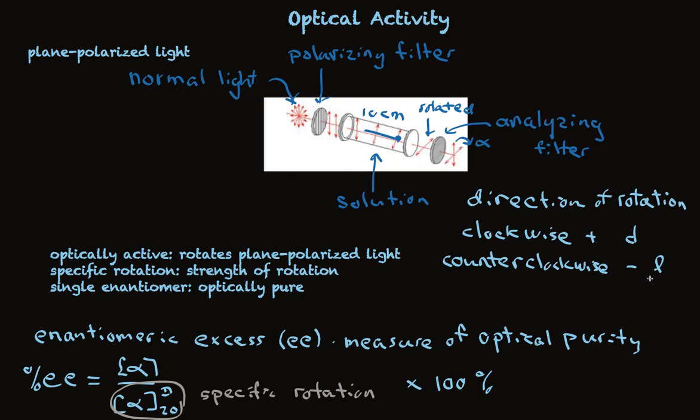The extent of rotation is measured by percent EE. You simply measure the rotation and divide it by the specific rotation, multiply by 100%, and it tells you the percent of optical purity.